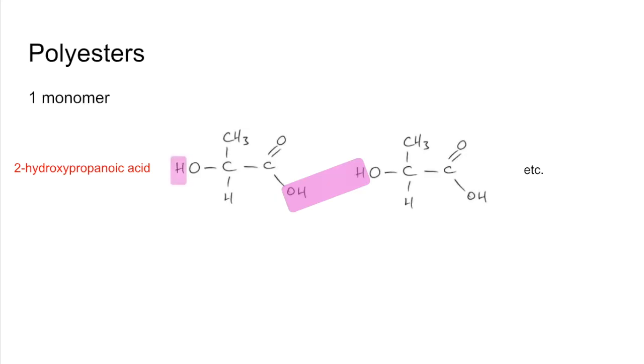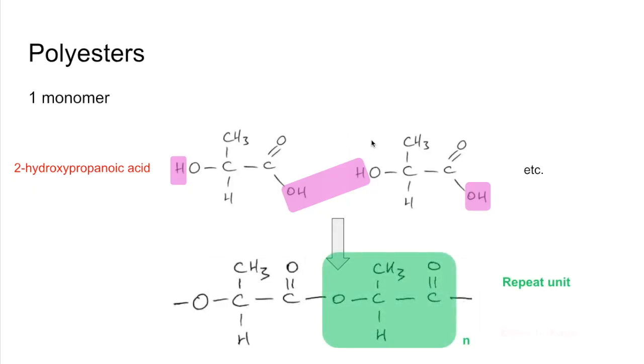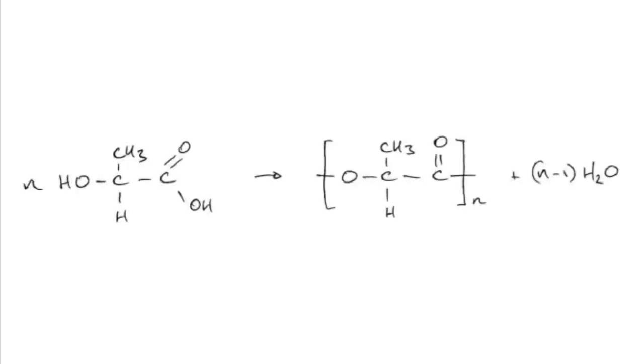Remember we've got to do that at all the functional groups. We'll join together what's left. I'm showing the entire product of this, but the repeat unit is just that bit there. The equation for this one would look like that. This time we're only getting N-1 water molecules because we only have one lot of N monomers, whereas in the previous one we had N times each monomer, so 2N-1.